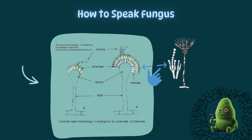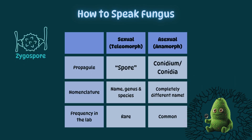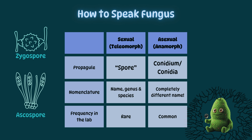Good job assimilating all of that! As alluded to previously, there are sexual and asexual states of many fungi. The sexual state is called the teleomorph, while the asexual state is called the anamorph. A somewhat obnoxious rule in mycology is that each state — sexual and asexual — will possess its own name as though they are completely separate organisms when, in fact, they are one. Fortunately, sexual states are seen less frequently in the lab. Conidium or conidia refers to asexual propagules, while the common term spore is reserved for sexual propagules. True spores often have prefixes such as zygospore or ascospore, depending on which phylum they belong to.